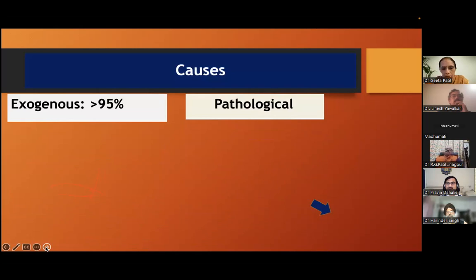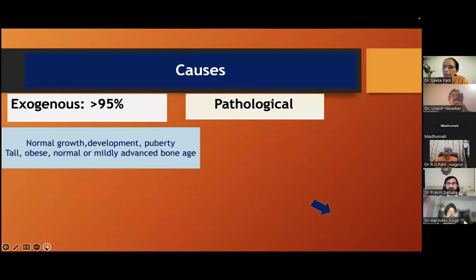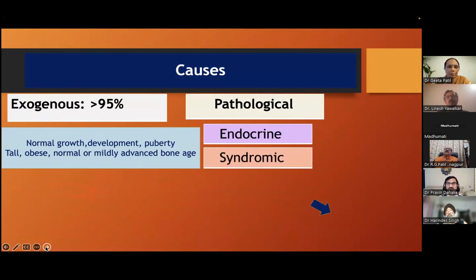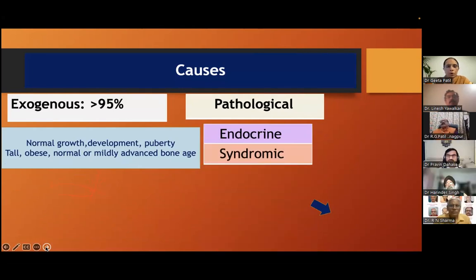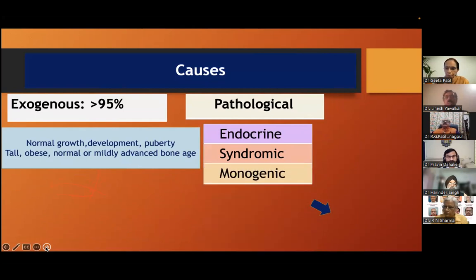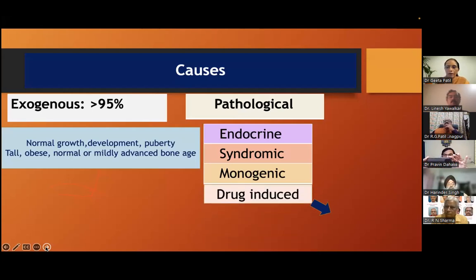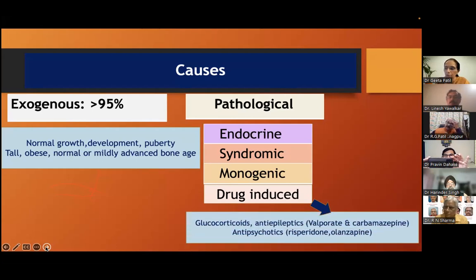Now let us go with the causes, which are divided and simplified. All of us know exogenous — or physiological — obesity is more than 95 percent, where there is normal growth, development, and puberty. The adolescent is tall, obese and has mildly advanced or normal bone age. But this diagnosis is by exclusion. So we need to know about the pathological causes: endocrine causes, syndromic causes, monogenic causes, and drug-induced causes.